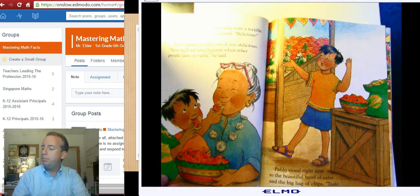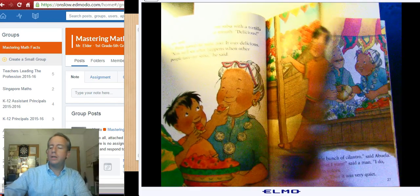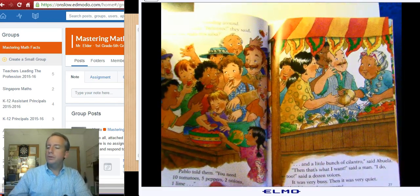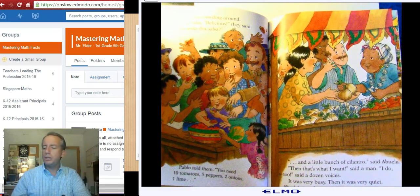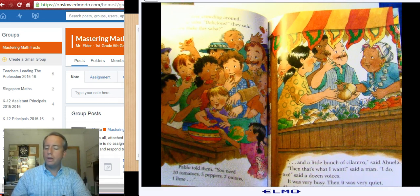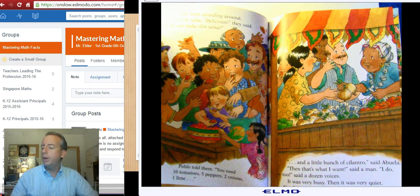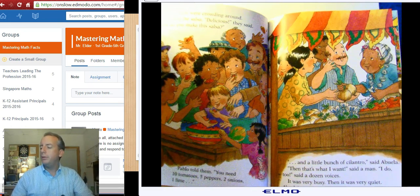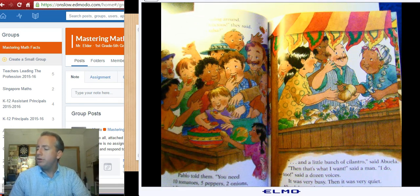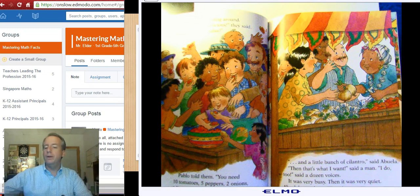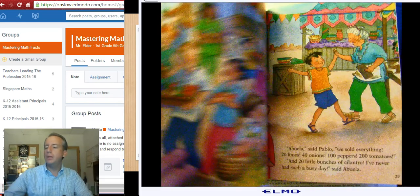Pablo stood right next to the beautiful bowl of salsa and the big bowl of chips. Taste our delicious salsa, he said. Soon people were crowding around. They tasted the salsa. Delicious, they cried. How did you make this salsa? Pablo told them, you need ten tomatoes, five peppers, two onions, and one lime. And a little bit of cilantro, said Abuela. Then that's what I want, said a man. I do too, said a dozen voices. It was very busy. Then it was very quiet. Abuela's stand was empty.